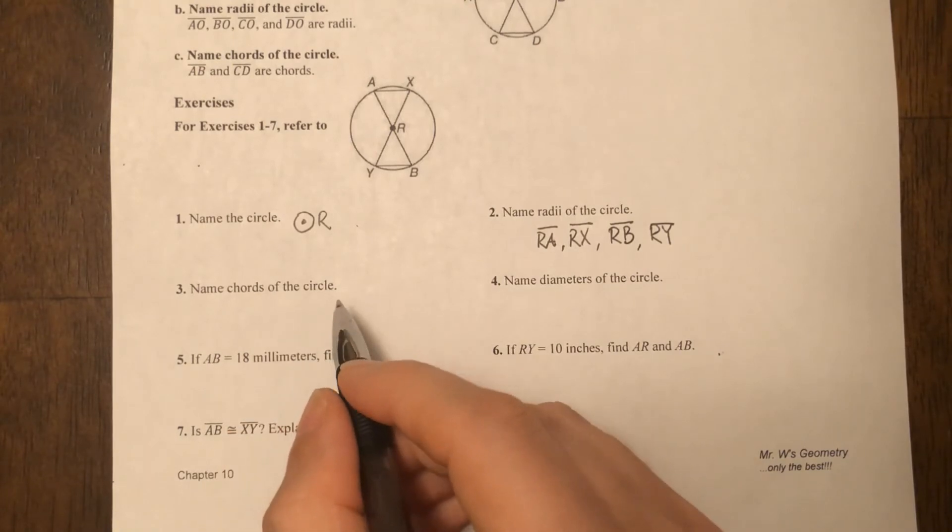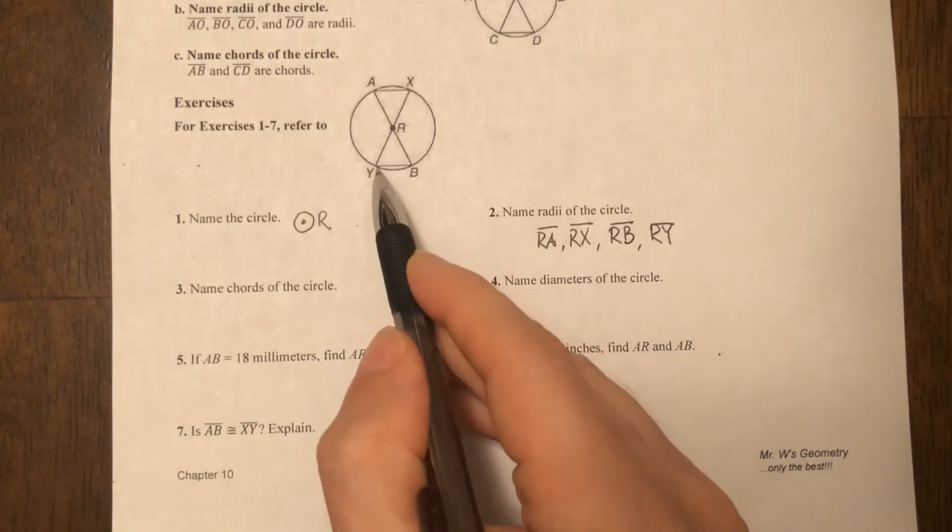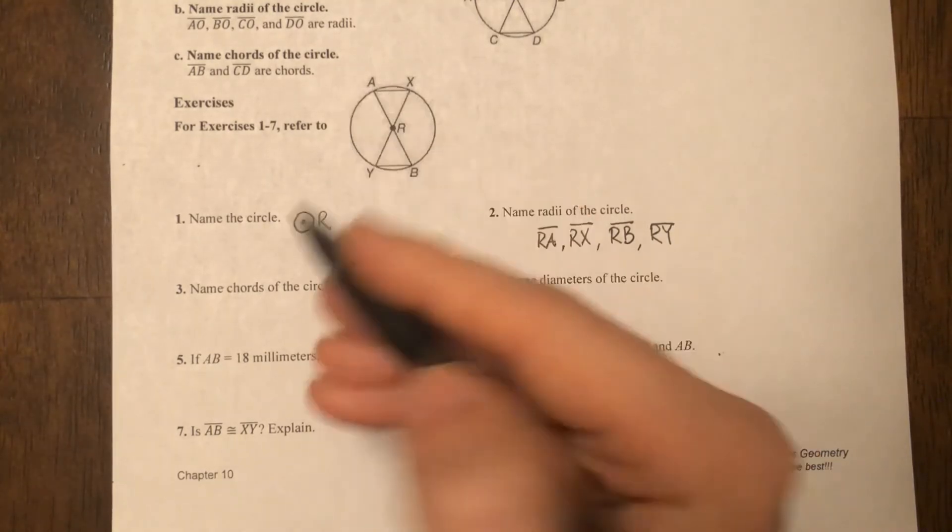When it says name the chords of the circle, there's only two chords in the circle. That would be from Y to B and from A to X.